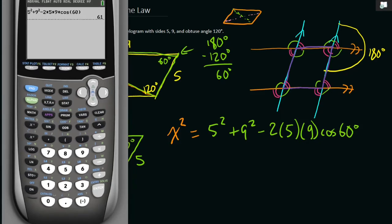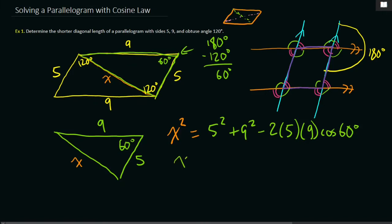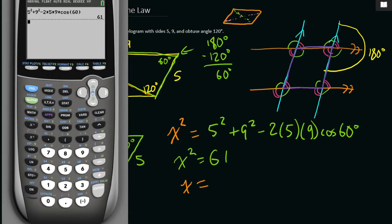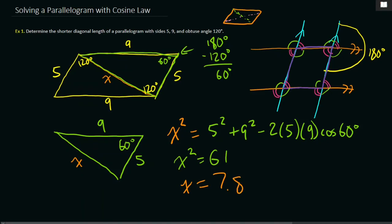So 5 times 61. So x squared is 61. So then x is, we need to square root. So x is second square root, second answer, 7.8 to the nearest tenth. 7.8.